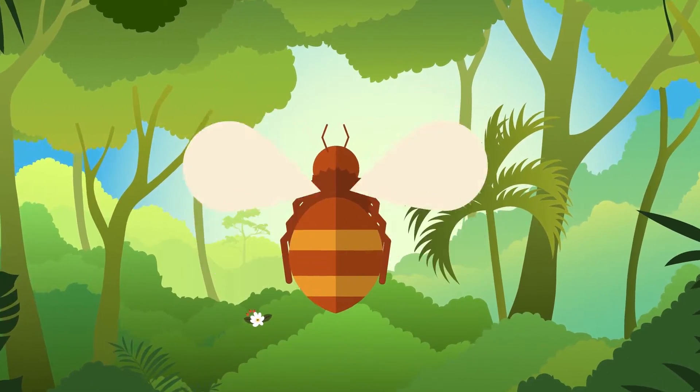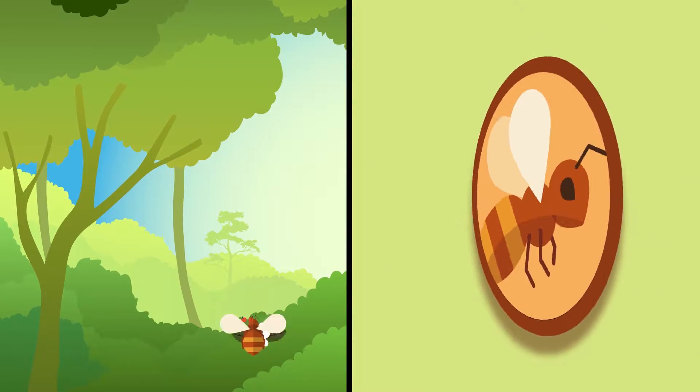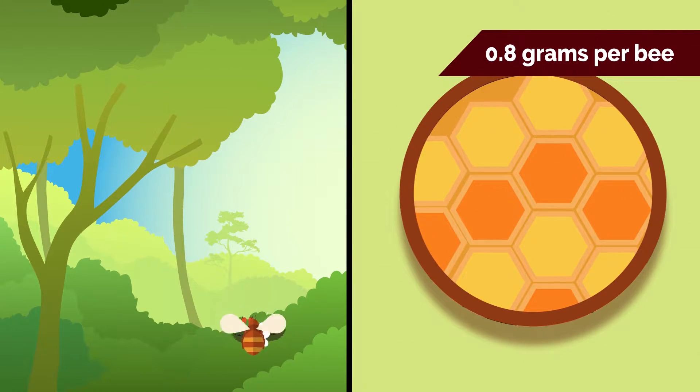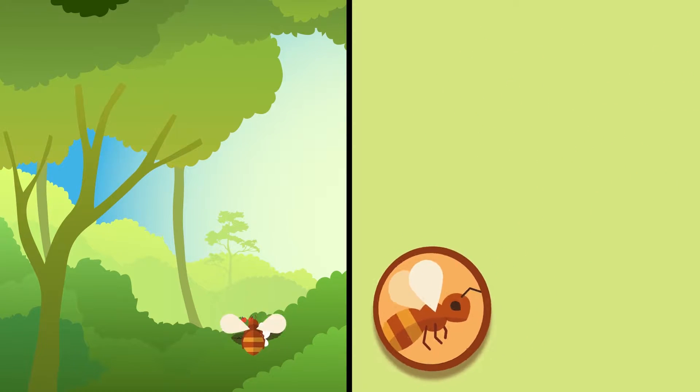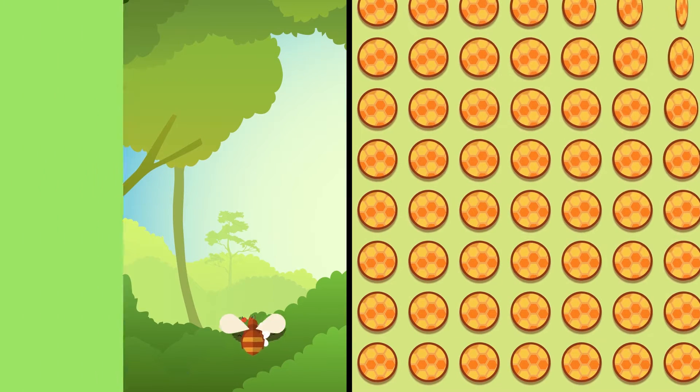Bees are very hard-working creatures. In its entire lifetime, a worker bee can gather 0.8 grams of honey and it takes roughly 1,250 bees to have one kilogram of the sweet stuff.